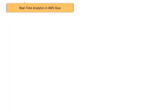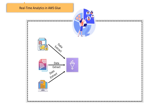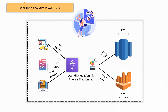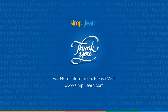A popular use case for AWS Glue is real-time analytics. Imagine you're working for a retail company that wants to analyze customer behavior in real time. Using AWS Glue, you can extract data from various sources — such as transactional databases, web logs, and social media feeds — and transform it into a unified format. This consolidated data can then be seamlessly loaded into analytics tools like Amazon Redshift or Amazon Athena for further analysis, helping you identify trends and make data-driven decisions faster than ever before.